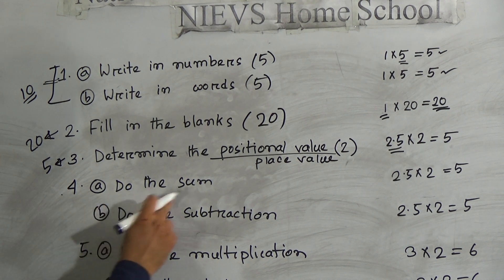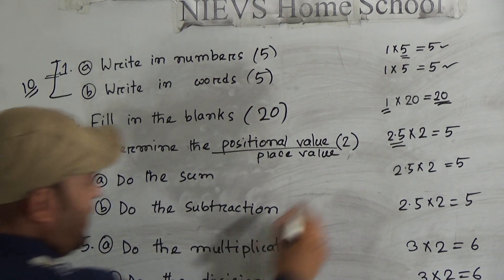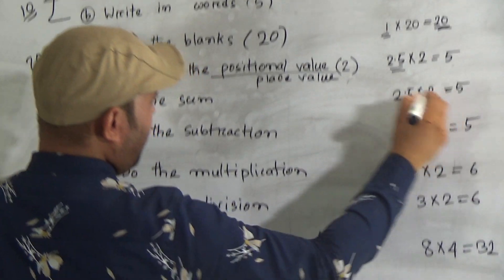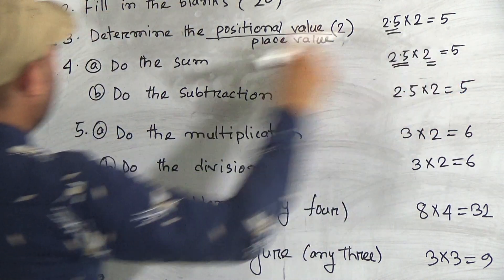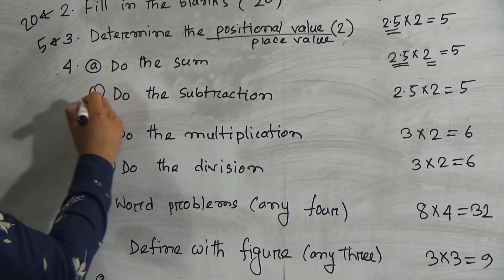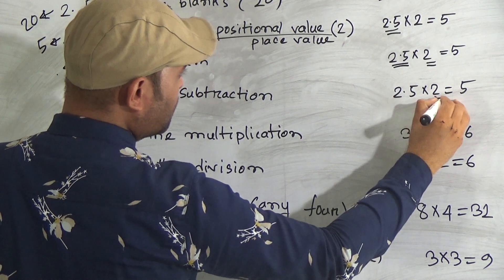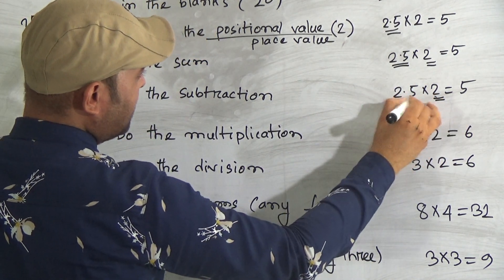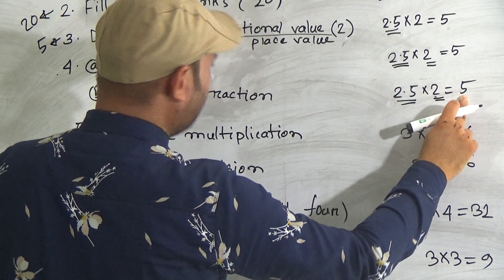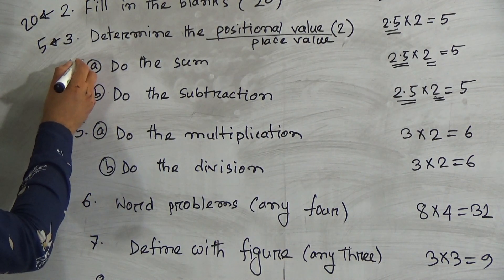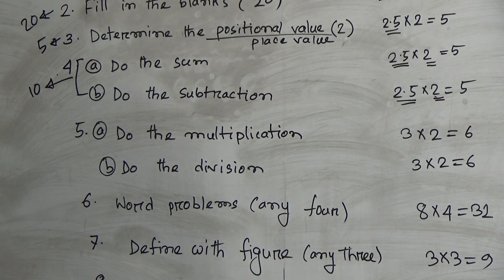Question number four: each subtraction contains 2.5 marks and there are two subtractions, so that is also five marks. In question number four, there are five marks.